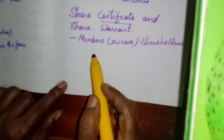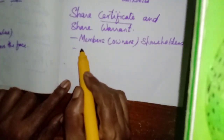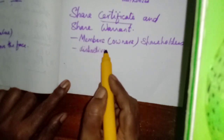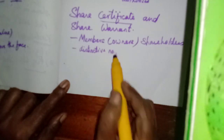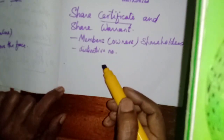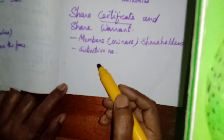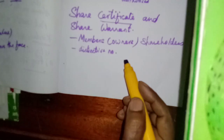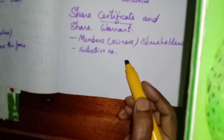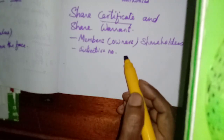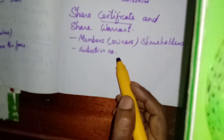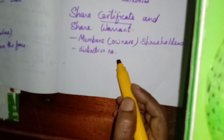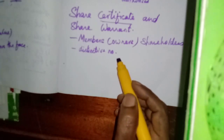Each share certificate must have a distinctive number — a different number must be given for each share. Only then can we find out which share belongs to which person. If some shares are sold to another person, we can easily identify who holds that particular share number.